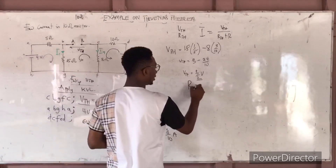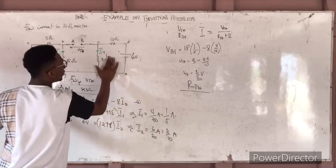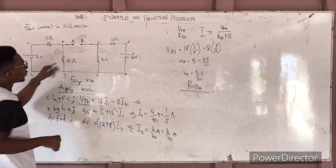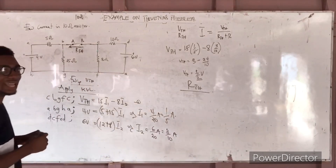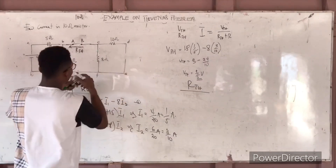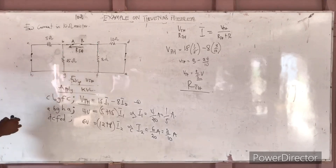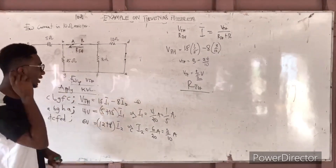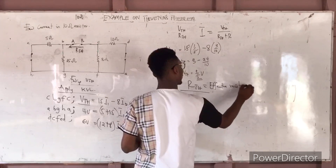After getting VTH, we now calculate the Thevenin resistance RTH. To find RTH, we place the resistor we are finding the current through back in the circuit and short-circuit all independent voltage sources. So we have one voltage source here — we short-circuit it — and another voltage source here — we short-circuit it as well. After short-circuiting both voltage sources, we have four resistors remaining.